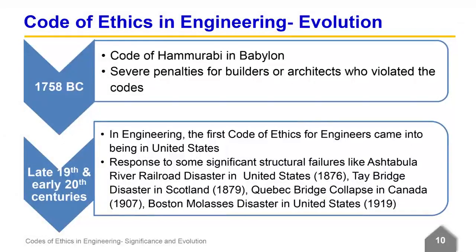Now let us have a look at the evolution of code of ethics in engineering — where and how did it begin? The early history of adopting a code of ethics can be traced back to the Code of Hammurabi in 1758 BC in Babylon. It had severe penalties for builders or architects who violated the codes. It attempted to bring in good engineering through this code.